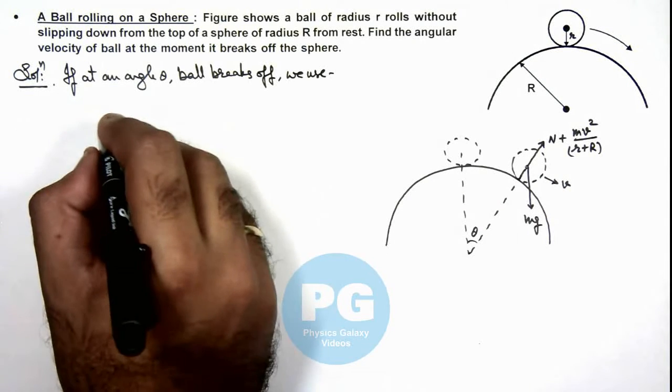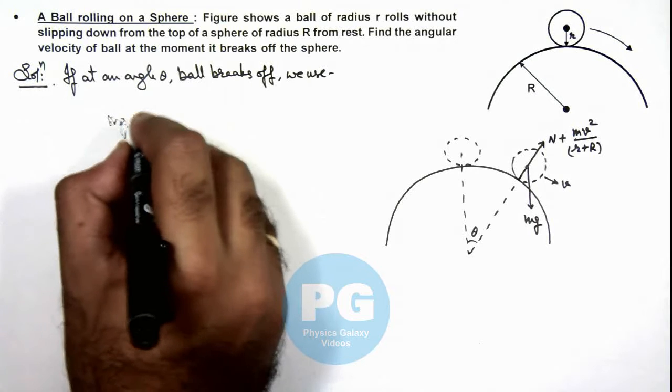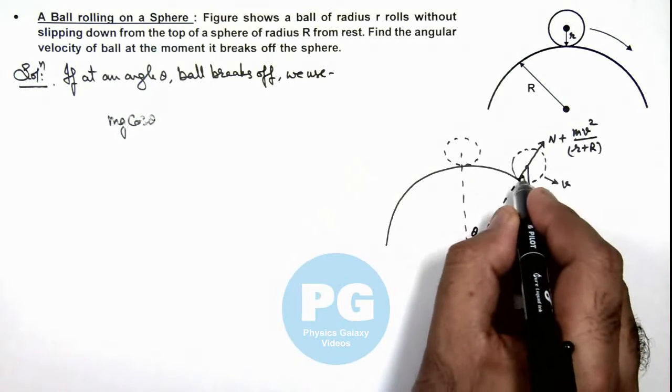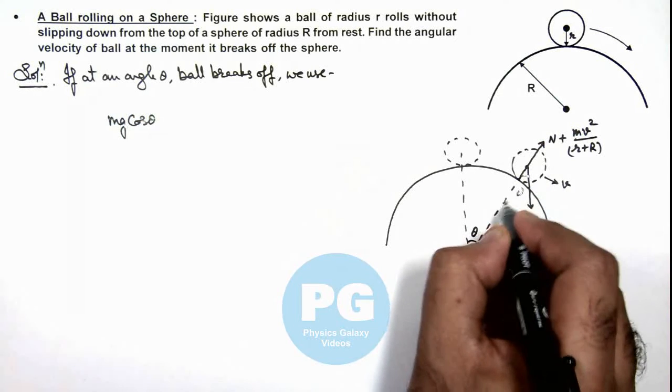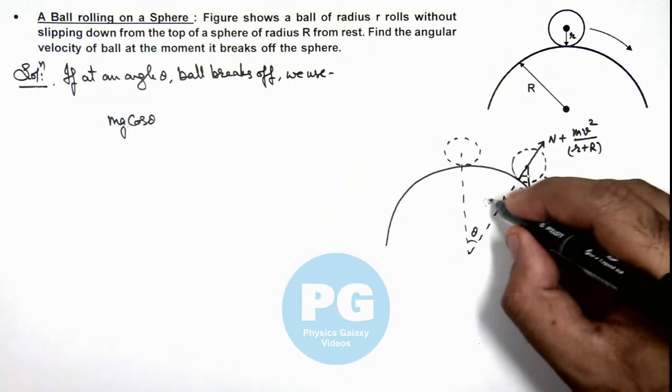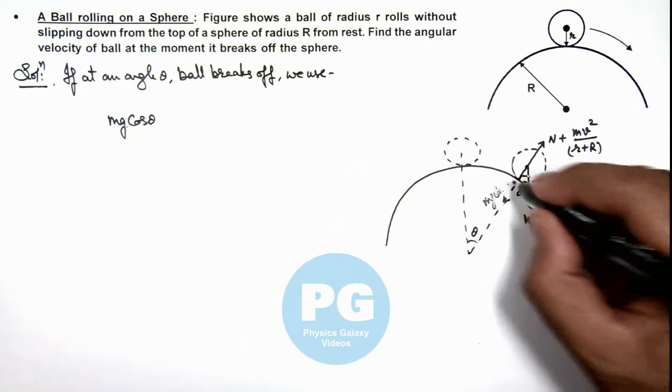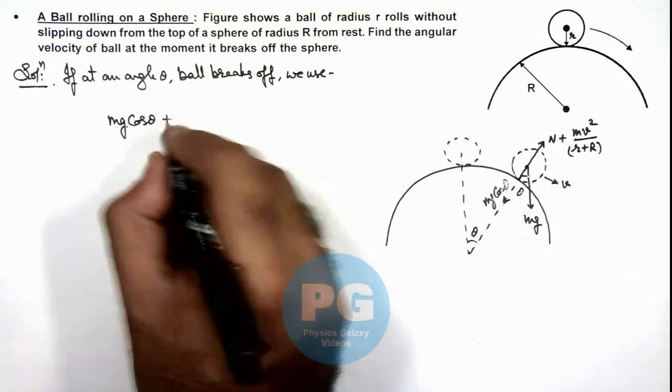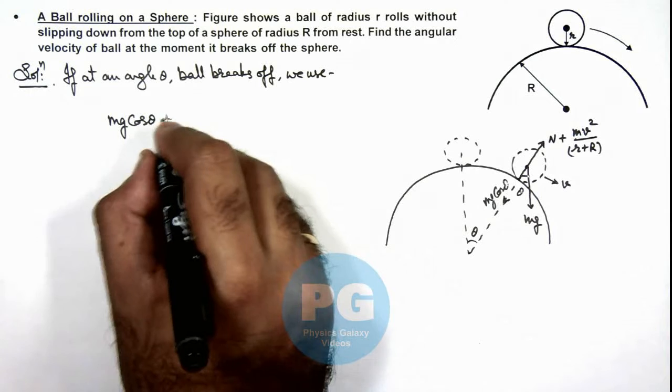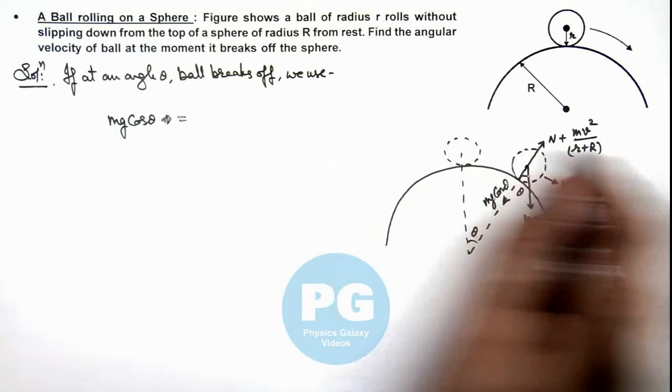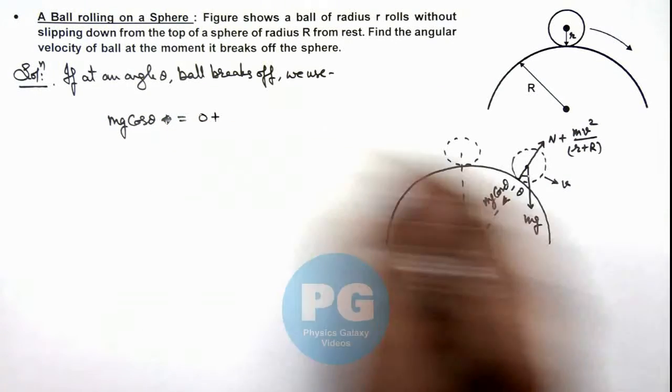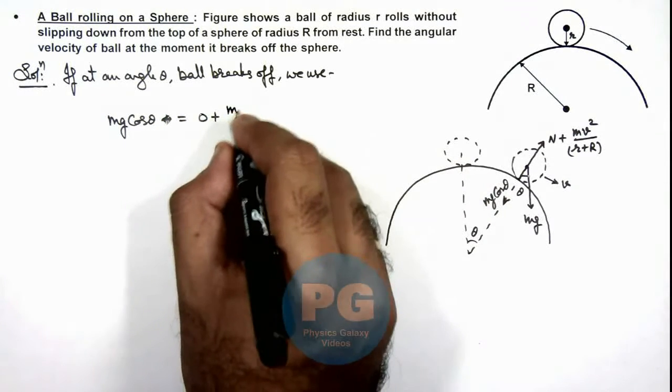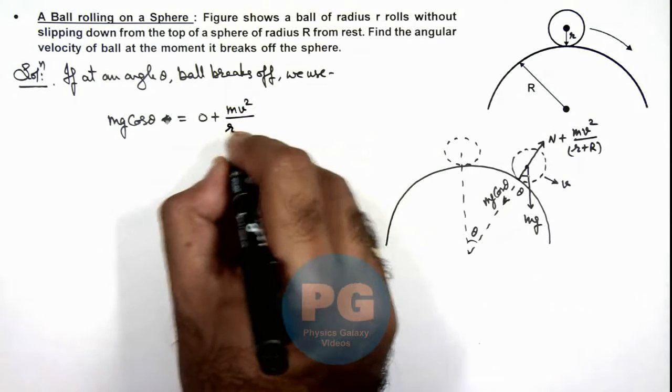Then we can write mg cos theta which is acting in the inward direction. The force is mg cos theta acting on it, and this must equal the normal reaction which is zero as it is breaking off, plus mv²/(r+R).